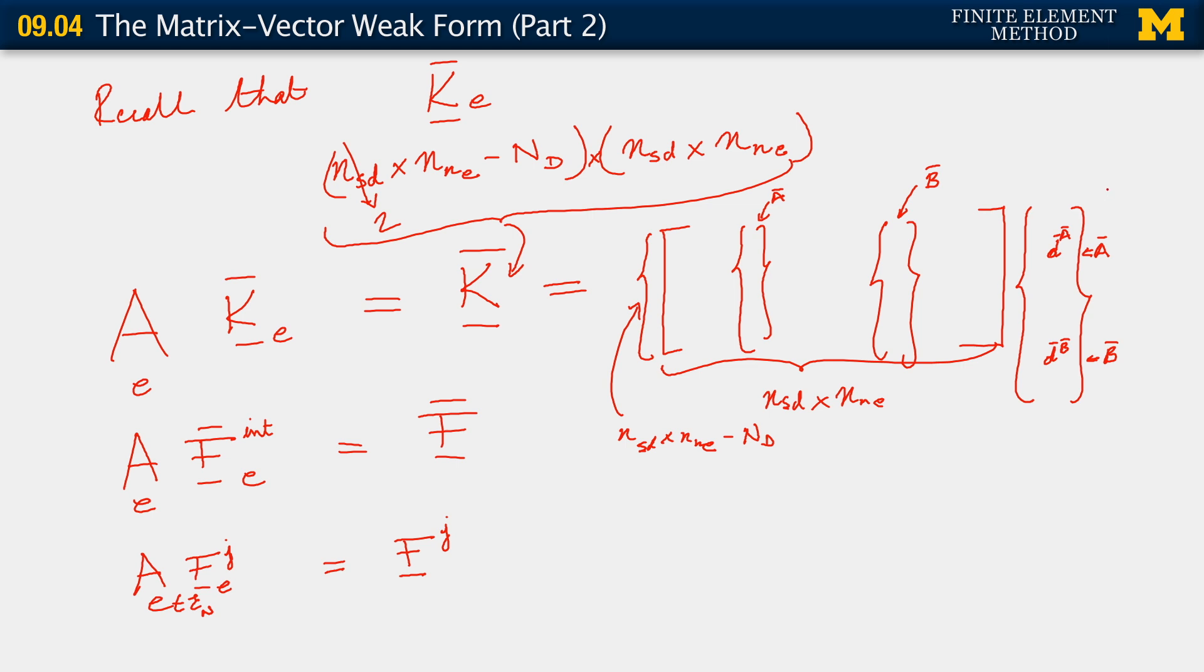So that is known. And likewise, that one would be known. And why would it be known? Because it corresponds to a Dirichlet boundary condition. Likewise, this one, DIR for short for Dirichlet.